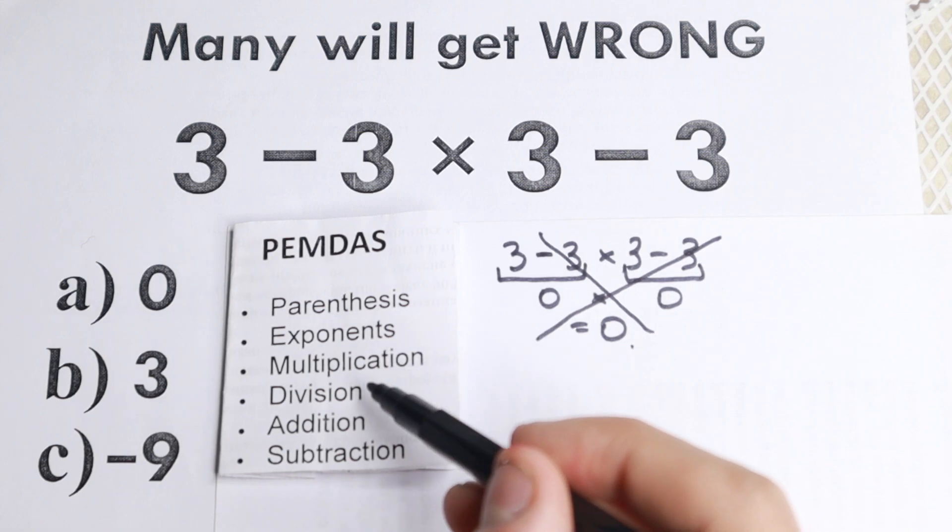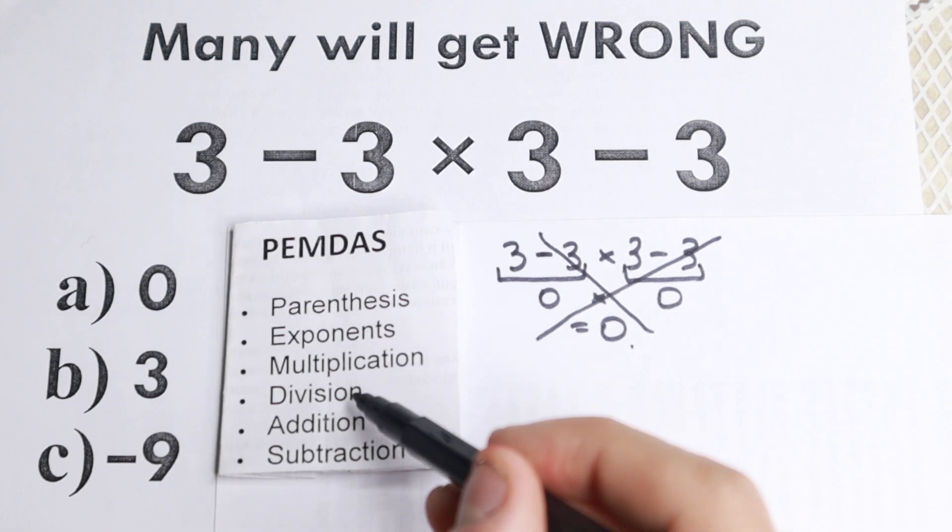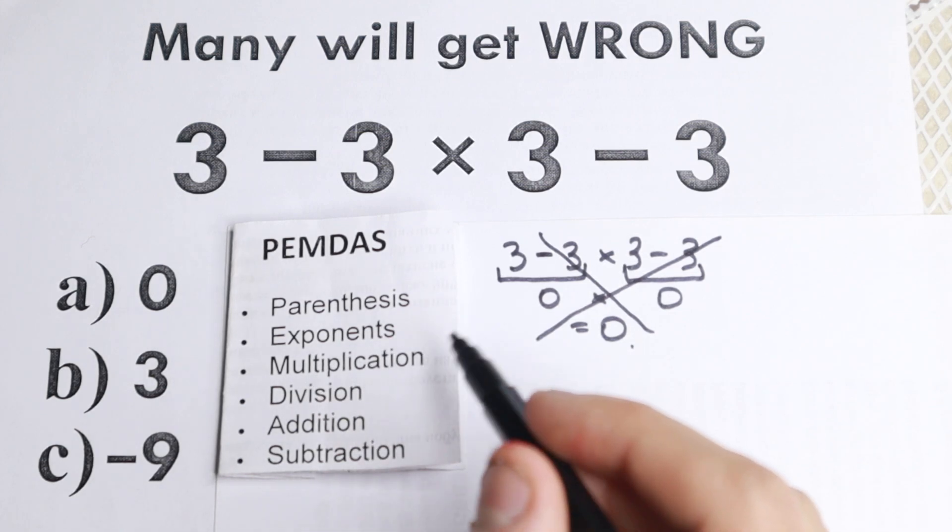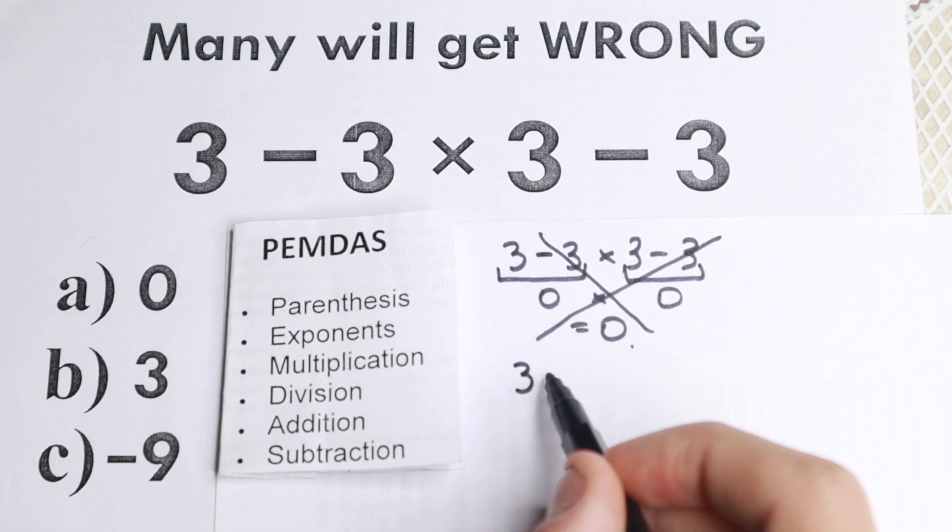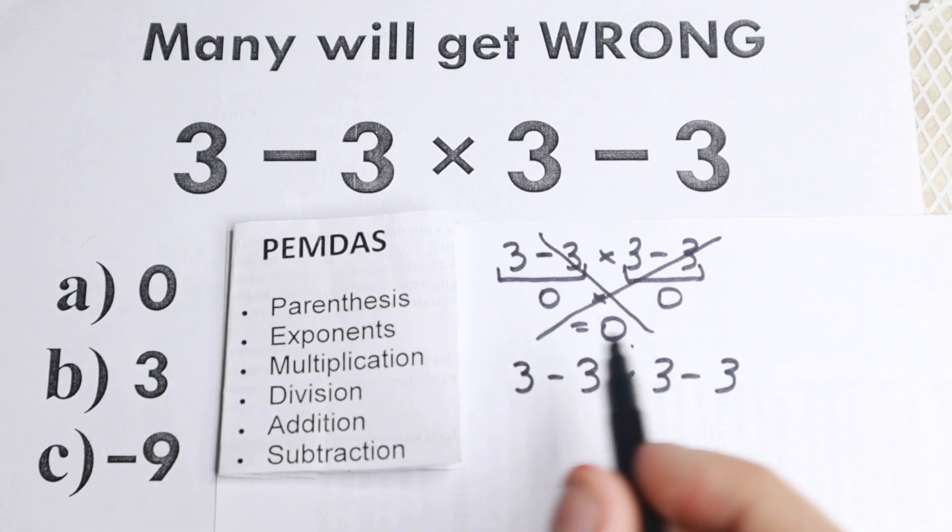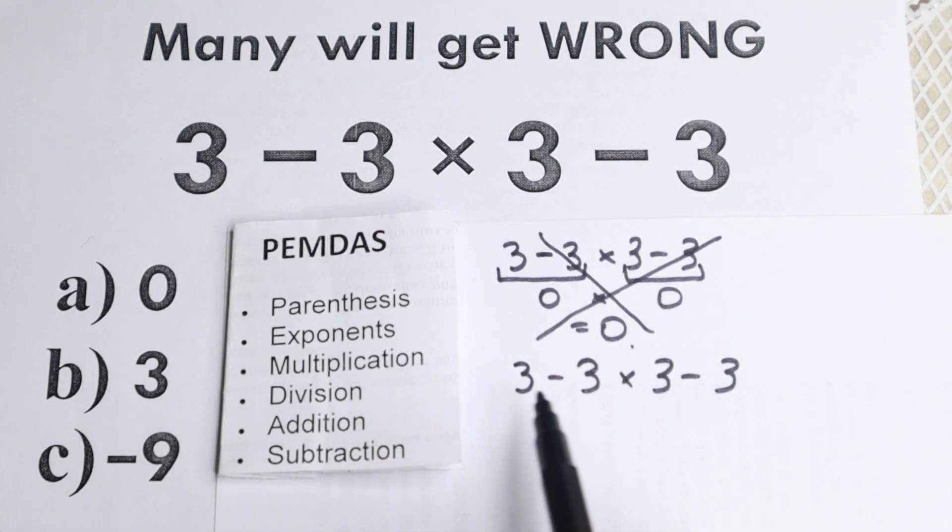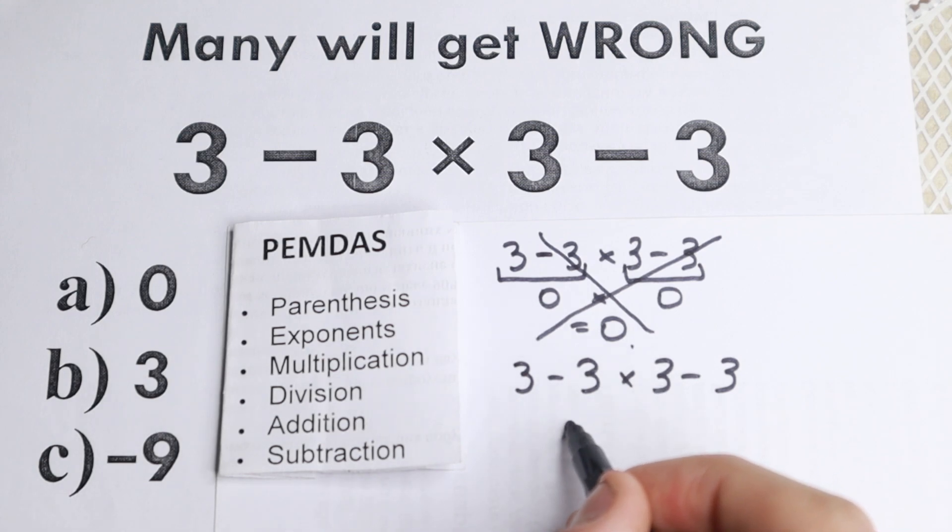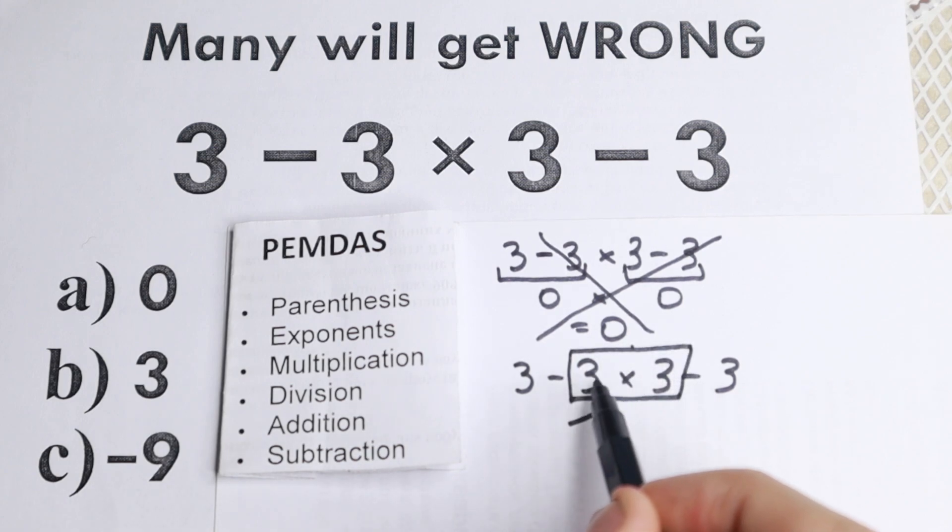Then we have multiplication and division. We don't have division, so we need to work only with multiplication. I'll rewrite this problem: 3 minus 3 times 3 minus 3. Multiplication, division part. We don't have division, we still have multiplication, so we need to look at the multiplication sign. We have this sign right here. We need to multiply first these two numbers from the left and to the right. So 3 times 3 equals 9.